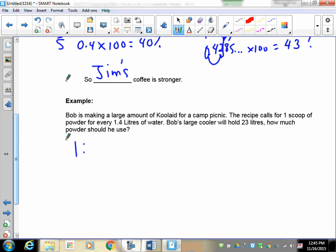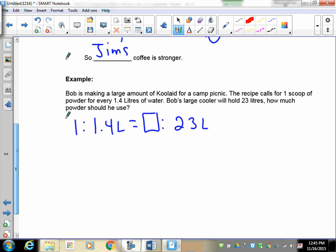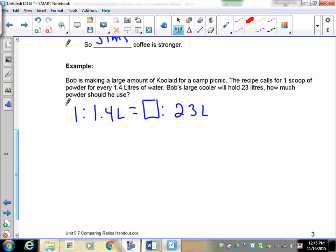You will encounter concentration questions but you also can encounter problems like this. So the recipe calls for one scoop of powder for every 1.4 liters, and we need to make sure that that ratio is kept the same. So Bob's cooler holds 23 liters, we need to know how much powder will he use. Now we've done this in the last lesson, so what I'd like you to do is solve this question.